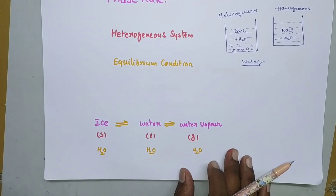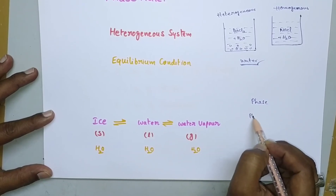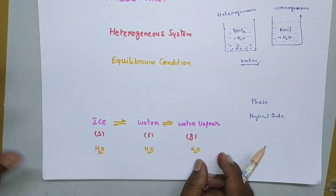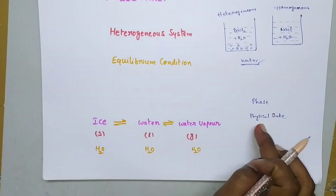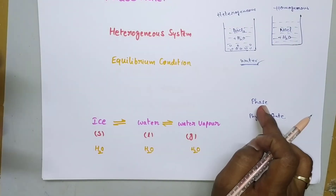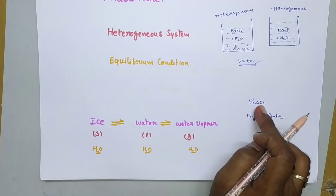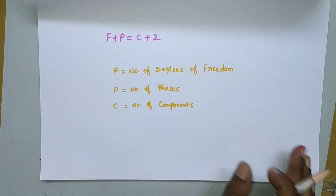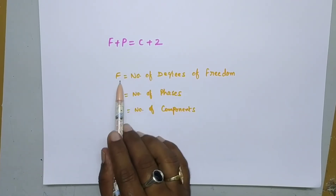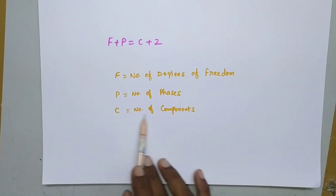Phase is entirely different from physical state — you have to remember this point. Physical state means whether it is solid, liquid, or gas. Now let us move on to the phase rule formula: F plus P is equal to C plus 2, where F is the number of degrees of freedom, P is the number of phases, and C is the number of components.